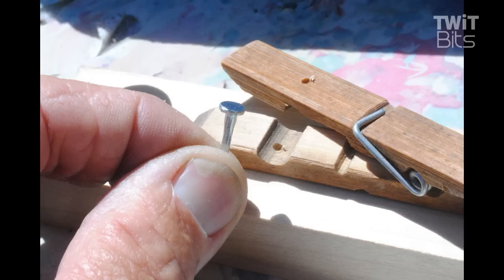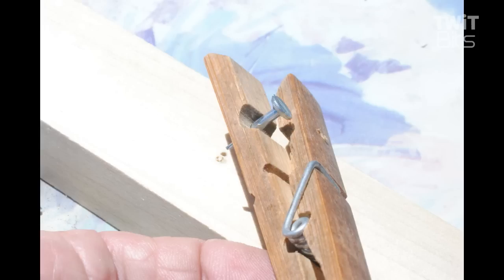You need to nail down that clothespin as a CW keyer so it doesn't jump around. And we do a flathead nail in the bottom of it because that's going to act as one of the contacts.